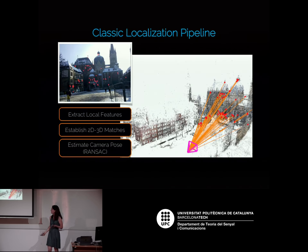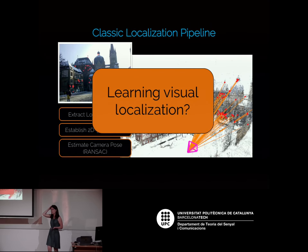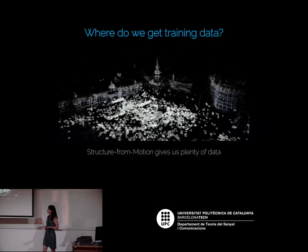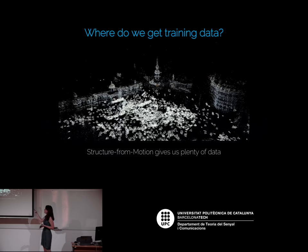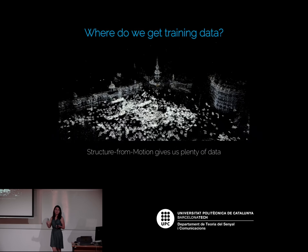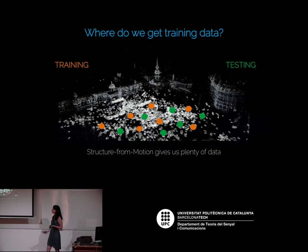This actually works really well for outdoor scenes — accuracies of centimeters. But once deep learning appeared in 2012–2013, people started asking whether we could learn the whole localization pipeline. For training data, you can run a structure-from-motion algorithm using Flickr images — for example, from a town in Prague — which gives us 3D points of key features and accurately located camera positions.